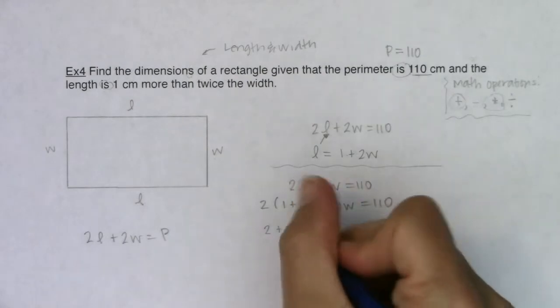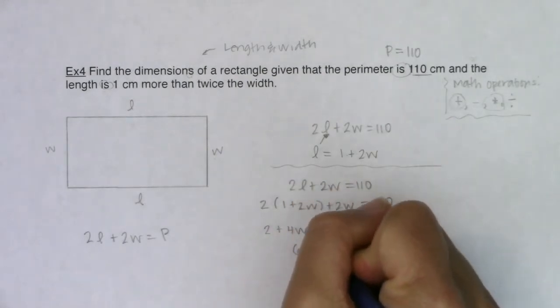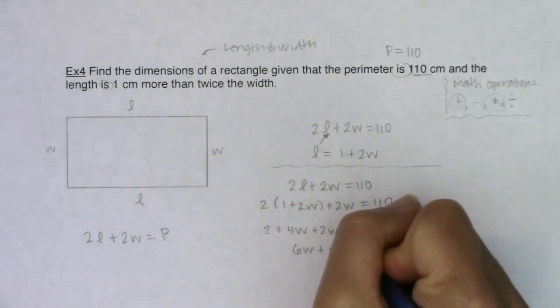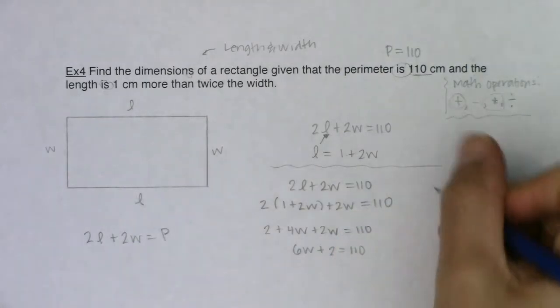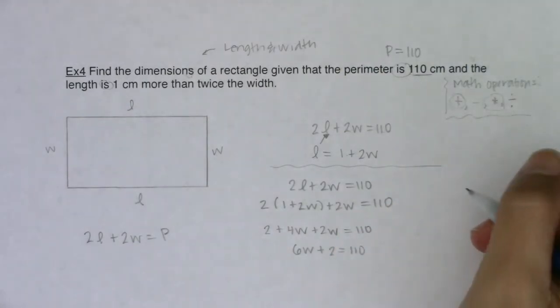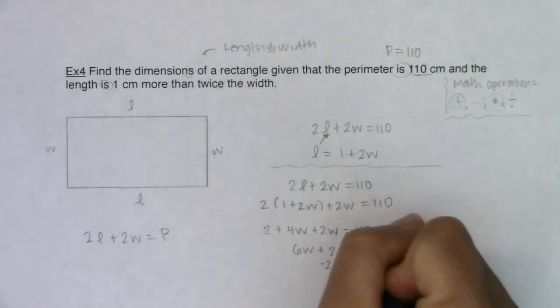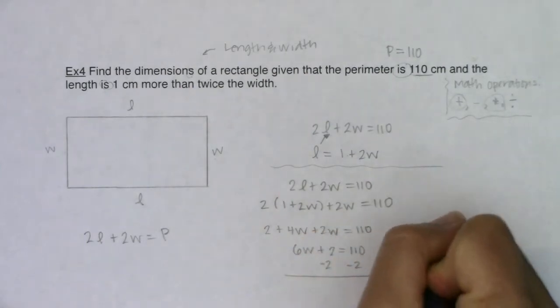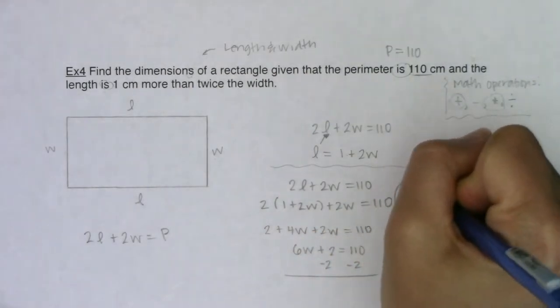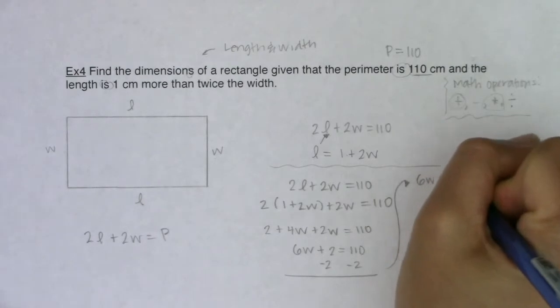So I get 2 plus 4W plus 2W is equal to 110. I've got a few like terms. I'm seeing 6W plus 2 will be equal to 110. I'm going to move over here just so I don't run out of room. I think I can subtract the 2 from both sides. Alright, now I'm going to move over here. So we're going to get 6W equaling 108.